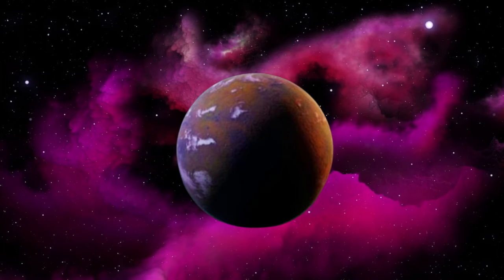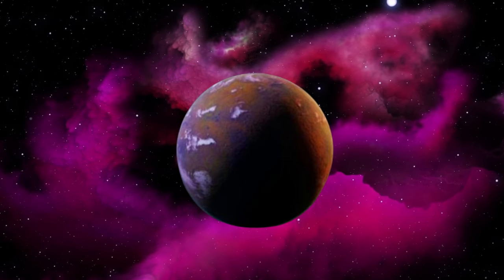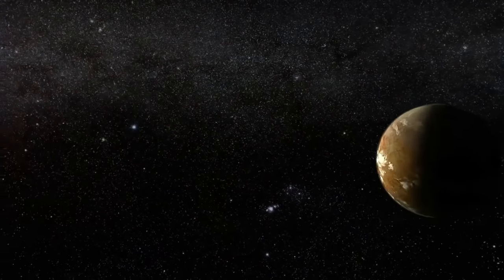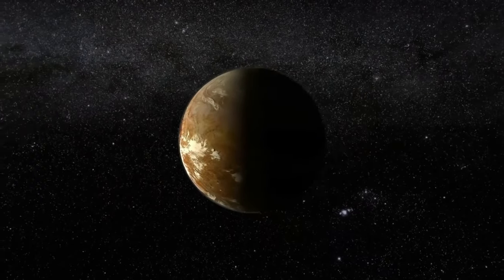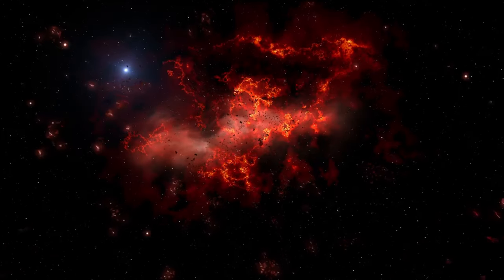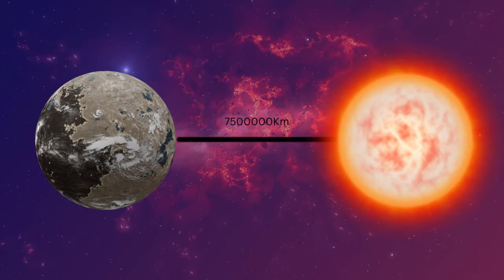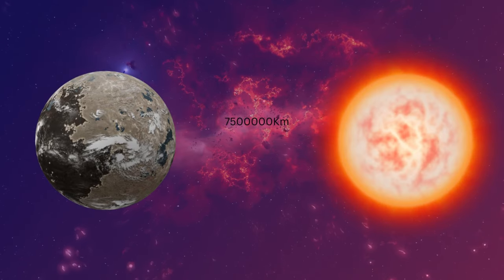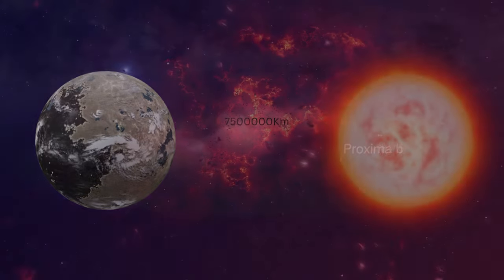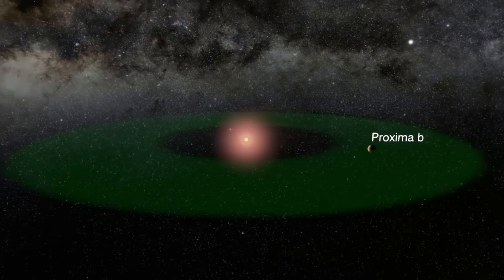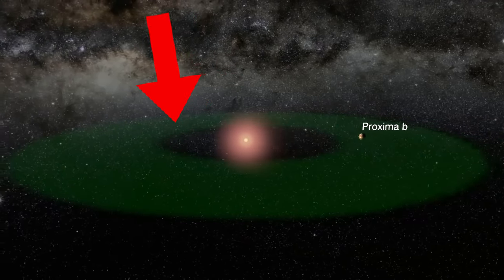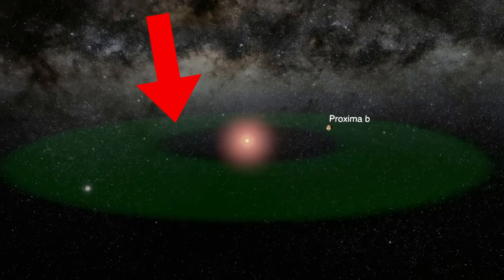It is unclear if it has an atmosphere or not. Proxima B is the next known planet of Proxima Centauri. It is believed to be the mass of 1.27 Earths, orbiting at 7.5 million kilometers from its parent star. The planet also orbits within the habitable zone, but we have no indication that it harbors an atmosphere.